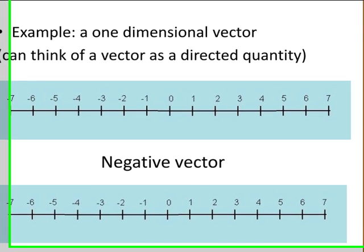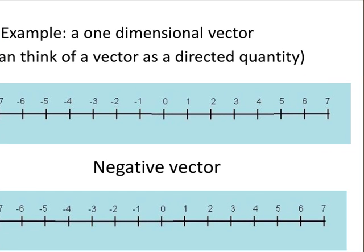Giving an example of a one-dimensional vector, you can take the number line. If you were to draw a vector from 0 to 4, you could think of that as the vector plus 4, as you're going 4 units, which is the length, and you're going in the positive direction.